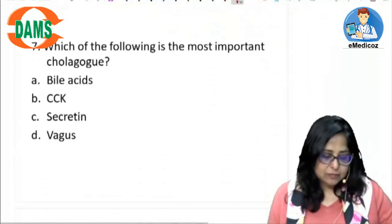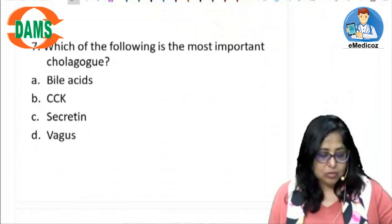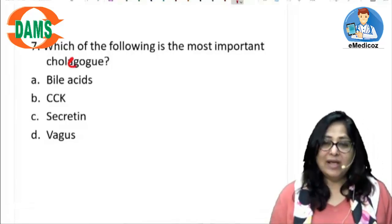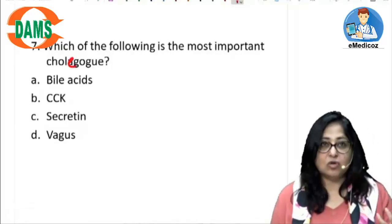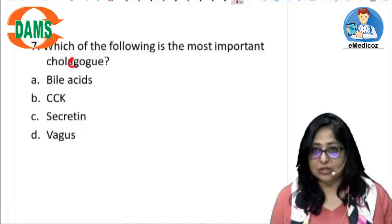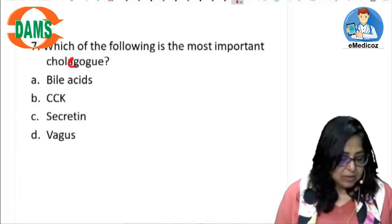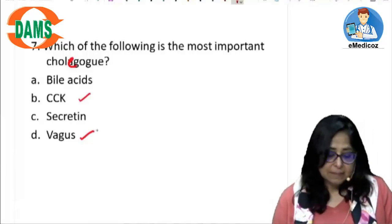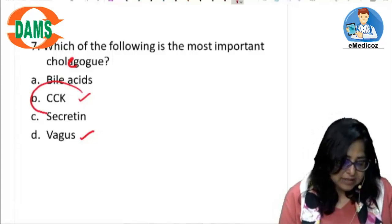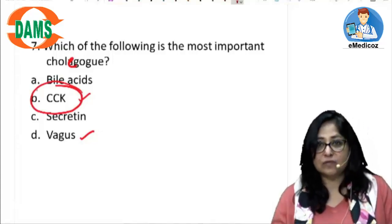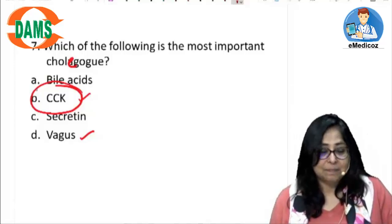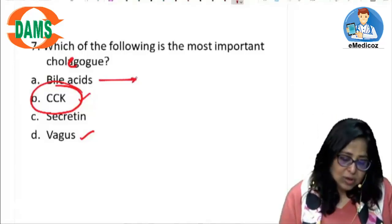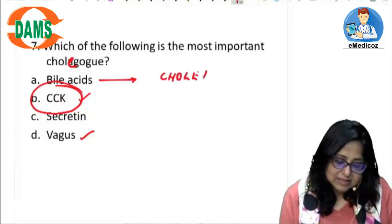Let's have a look at the next question: which of the following is the most important cholagogue? A cholagogue is a substance which causes contraction of the gallbladder and causes secretion of bile. Now CCK and vagus are both cholagogues, but out of these, the more important agent responsible for contraction of the gallbladder is CCK — cholecystokinin.